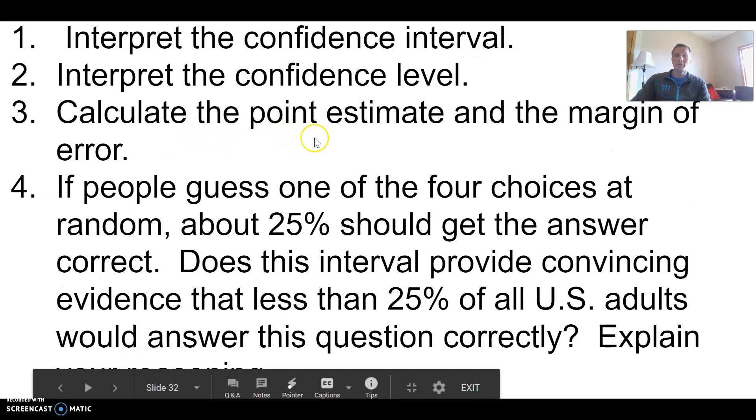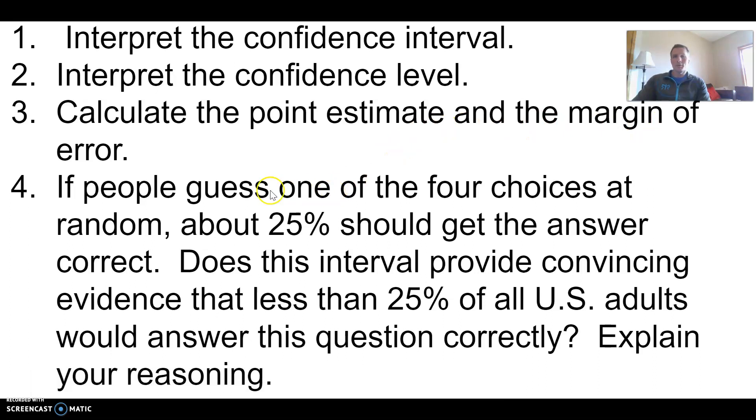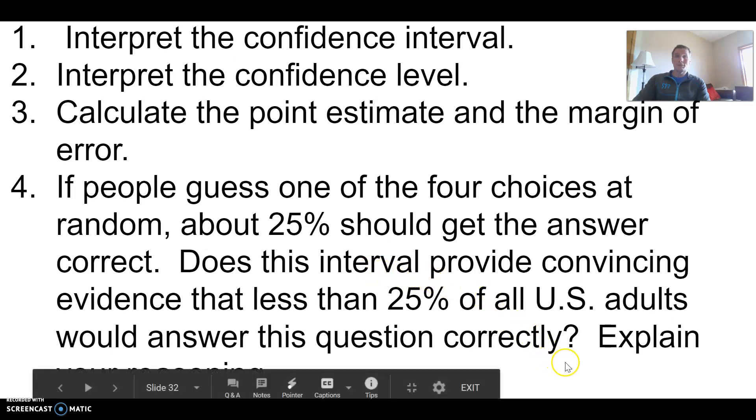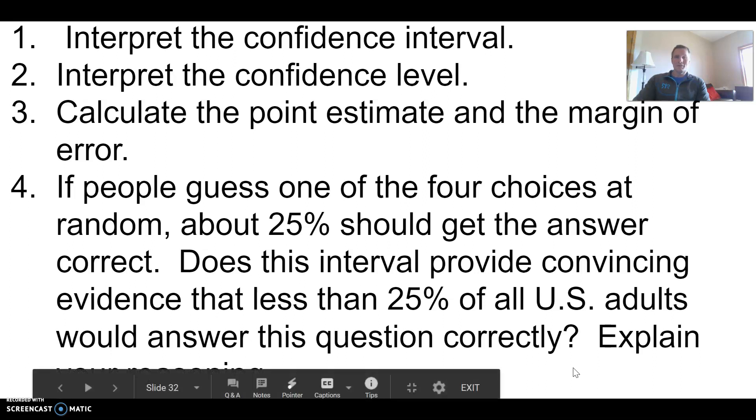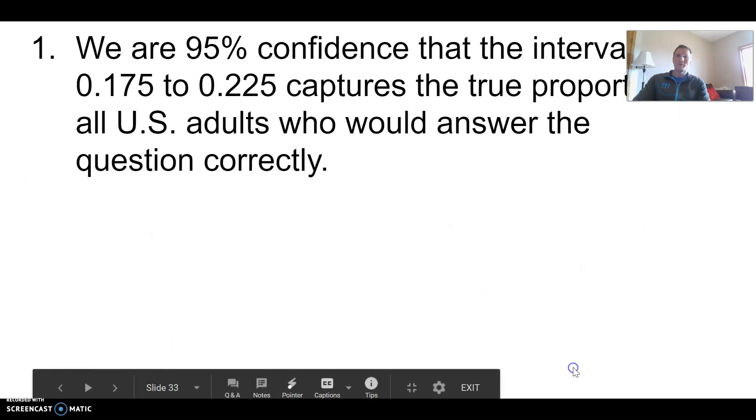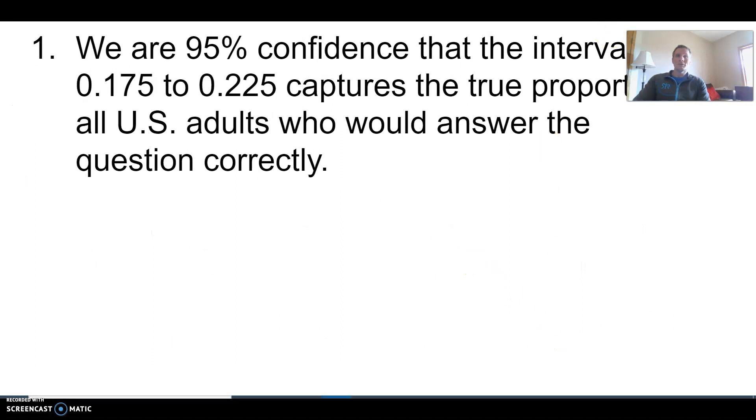From that, you can get your point estimate and margin of error. One more question: if people guess one of the four choices at random, about 25% should get it correct. Does this interval provide convincing evidence that less than 25% of U.S. adults would answer the question correctly? Is there evidence that fewer than expected by guessing get it correct?